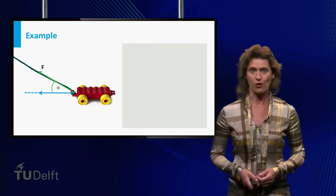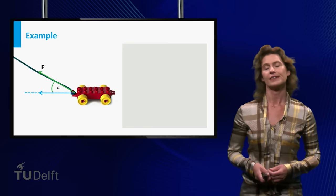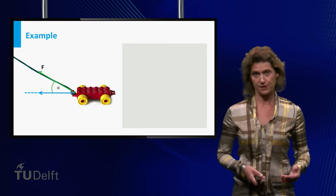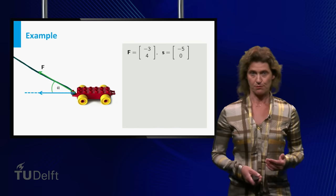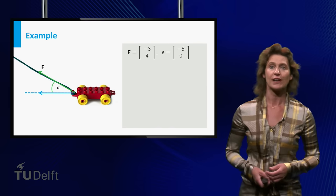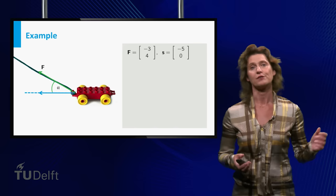Let's now return to our moving car. Imagine the constant force F is given by the vector minus 3, 4 and the displacement vector S by minus 5, 0.